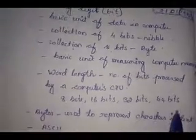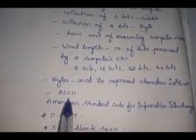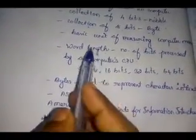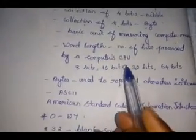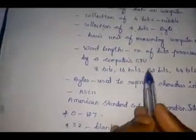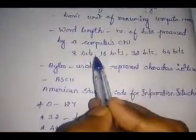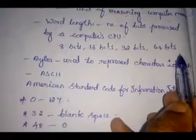Computer memory is measured by the byte. Now we will see about word length. Word length refers to the number of bits processed by a computer CPU. Each and every computer CPU has a different capacity. Some of the different capacities are: 8-bit processor, 16-bit processor, 32-bit processor, and 64-bit processor.